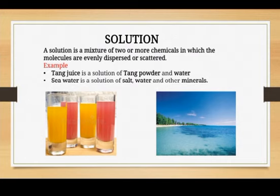In the diagram you can see two juices — one is yellow and one is a reddish color — which are examples of Tang juices. You can mix two tablespoons of Tang powder with water and make a solution of it. That solution will be a clear solution, not one in which some particles are suspended.